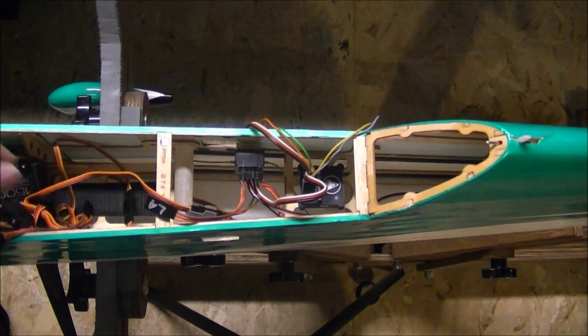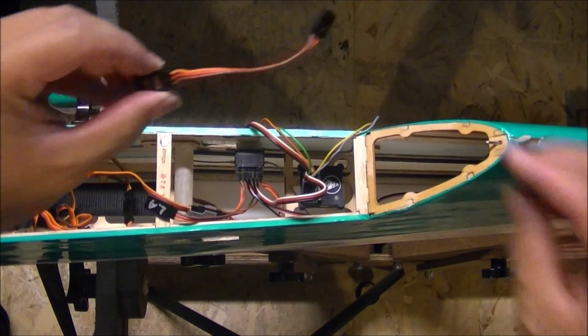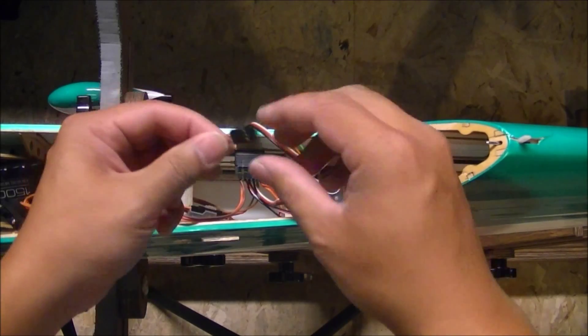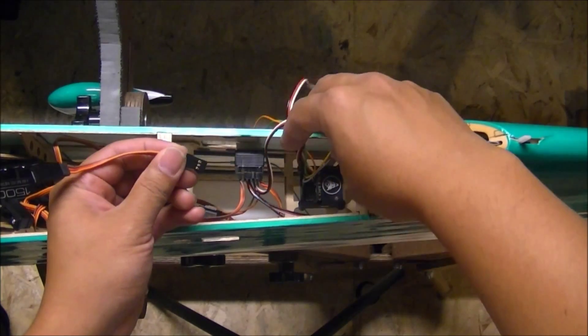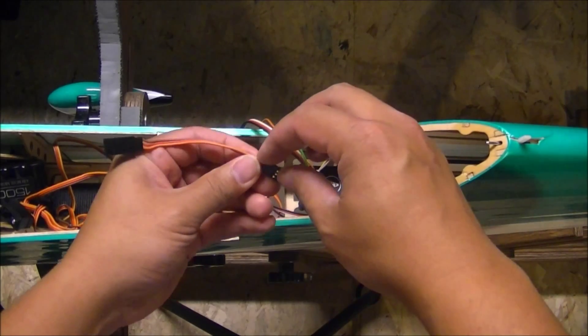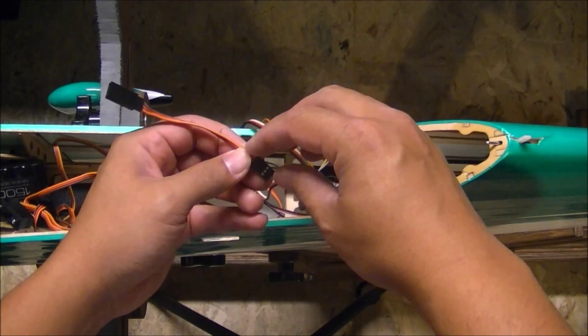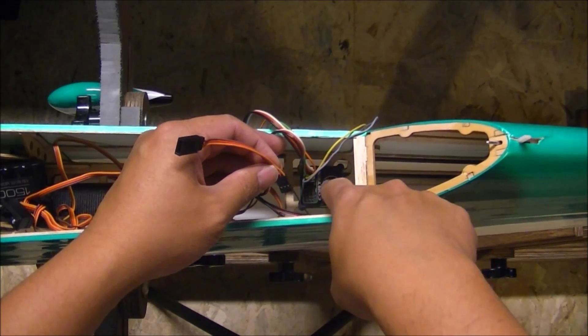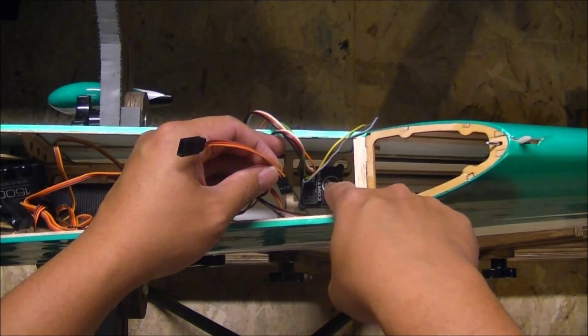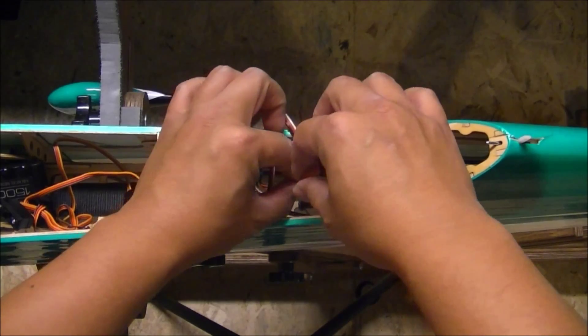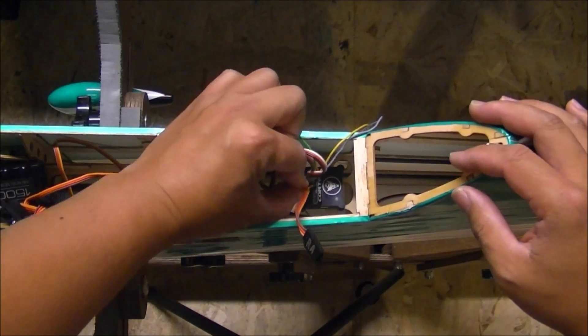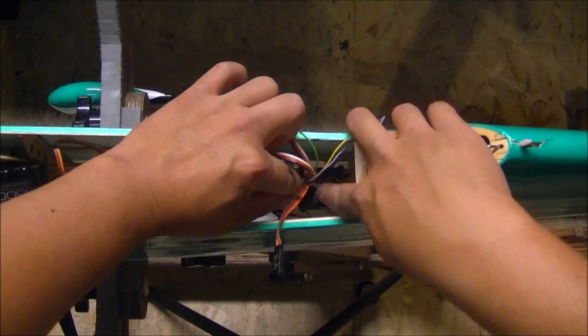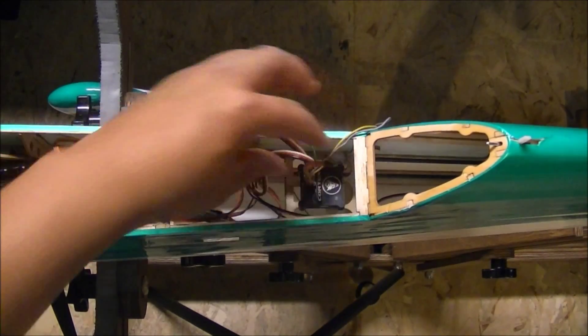So that's in. I'm going to take my right aileron servo extension, because I take the wings off of this plane, and plug it into the Cortex. I'm going to plug your wires into the Cortex. Your signal wire, whether it be orange, white, or yellow, will always face towards this picture on the Cortex. I'm going to go into the very first bank, which is A, and plug that in.